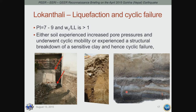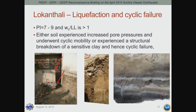There were two culprits potentially in play at Locanthali: black cotton clays and sands. Material with plasticity indices of 7 to 9 and water content-to-liquid-limit ratios greater than 1 was found. We think it was either increased pore pressures in some layers resulting in cyclic mobility, or structural breakdown of sensitive clays and cyclic failure — possibly a combination of both. This is subject to additional investigation and has important implications for Kathmandu in terms of engineering design.